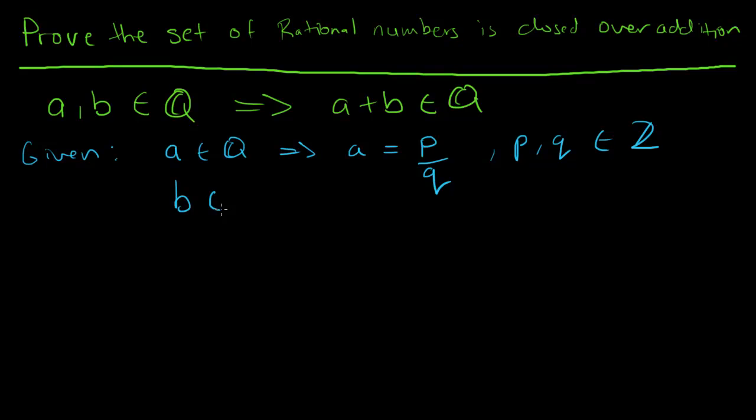The same can be said of B. If B is a rational number, then B can be represented as R over S, where R and S are both integers. That's a given, meaning that's basically the definition of what a rational number is.